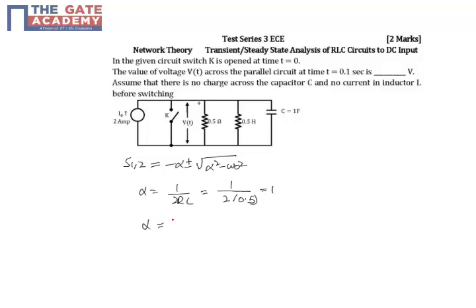If it was a case of series RLC, then alpha would be 1 by 2L/R, just to remind you. But if it was series RLC, everything would be the same other than the formula used for determining alpha.